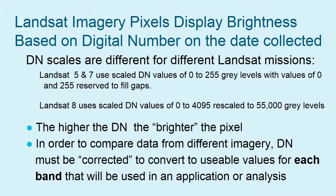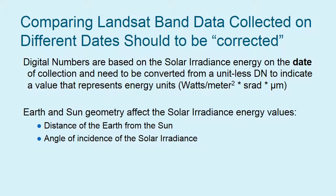In order to compare data and use data in analysis from different imagery, the digital number needs to be corrected to convert to usable values for each band. Comparing Landsat band data collected on different dates should also be corrected. The digital numbers are based on solar irradiance energy on the date of collection, and these need to be converted to energy units. We also have to correct for the earth-sun geometry — that is, the distance from the earth to the sun and the angle of incidence of the solar irradiance on the date of collection.